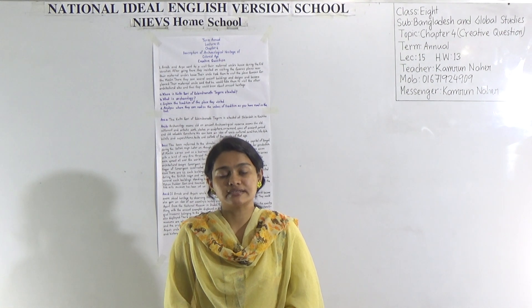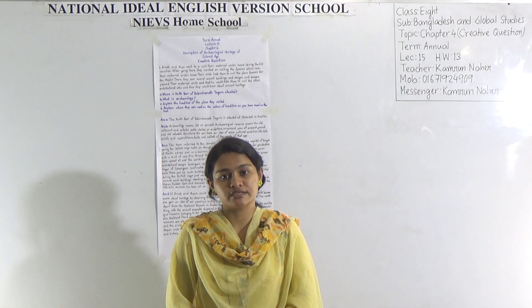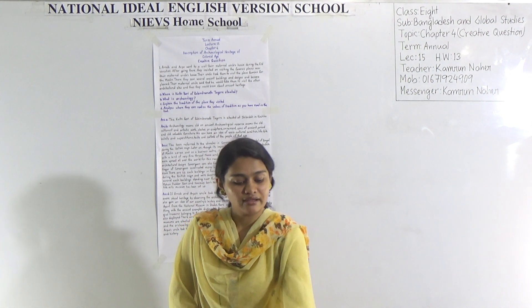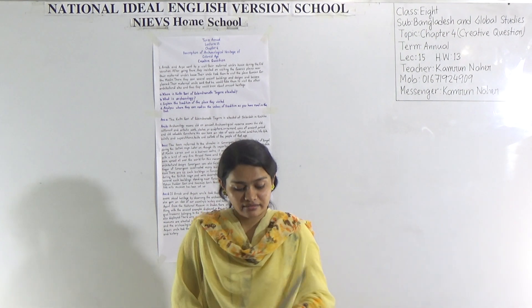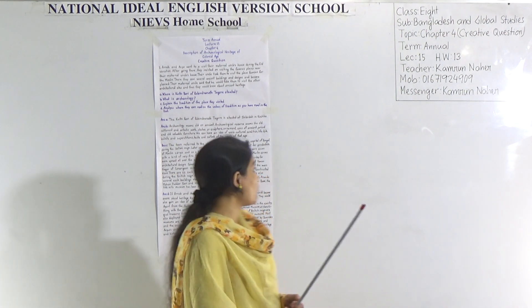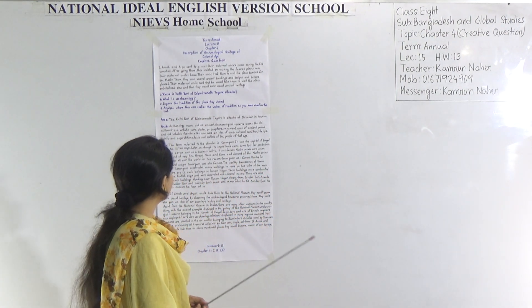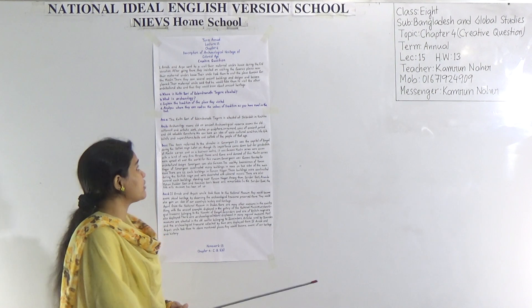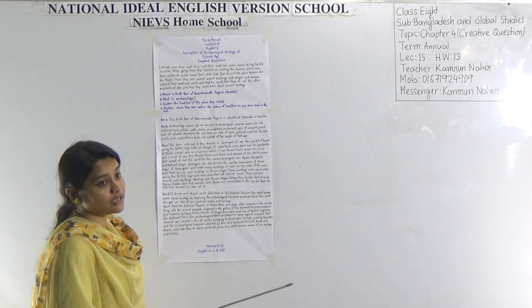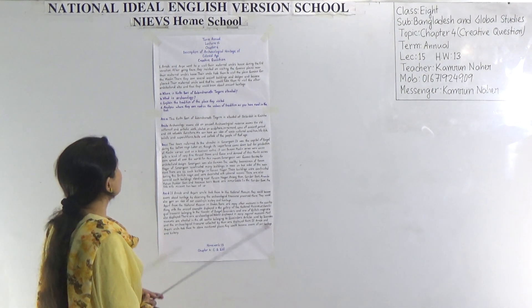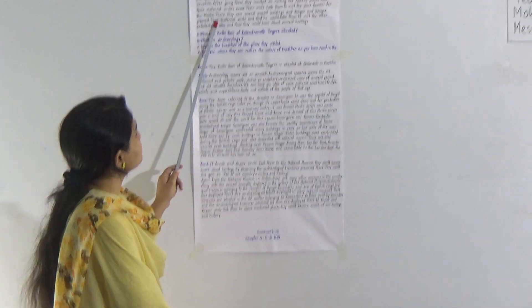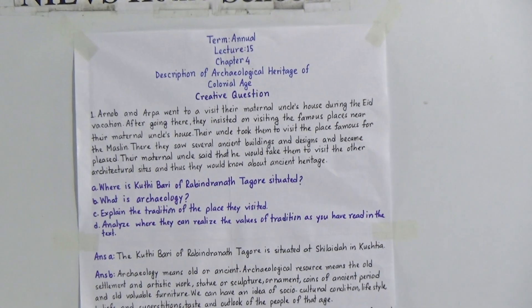Today we will discuss a creative question answer from Chapter 4. The name of this chapter is Description of Archaeological Heritage of Colonial Era. So let's discuss — at first we will read the stem.